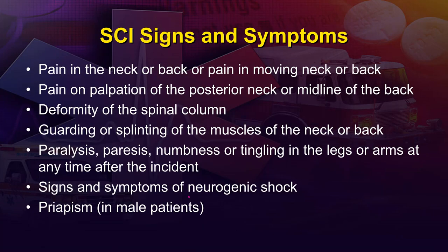A variety of signs and symptoms are associated with spinal cord injuries. These include pain or changes in sensation in the neck or back, deformities like step-offs or depressions along the spinous processes, muscle guarding or splinting of the neck, numbness or tingling, paralysis, and signs of neurogenic shock. In some cases there may be priapism — an involuntary erection caused by blood vessel dilation below the level of a cord transection when those vessels no longer receive constriction signals.